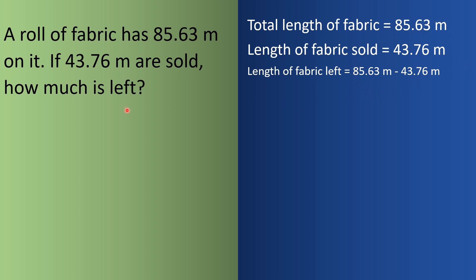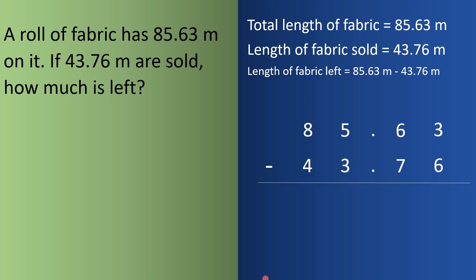The keyword here is 'left', which tells us to subtract. We write them in column form: 85.63 m on top and 43.76 below. Since 3 is less than 6, we take a borrow — the tenths digit becomes 5 and the hundredths become 13. So 13 minus 6 equals 7.